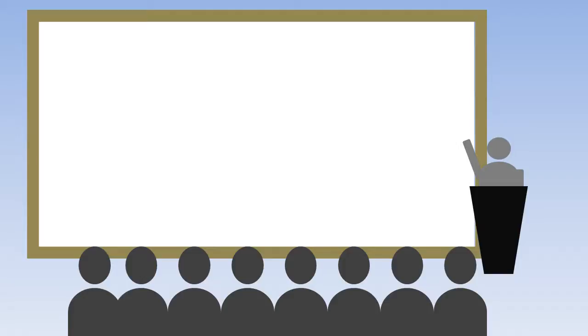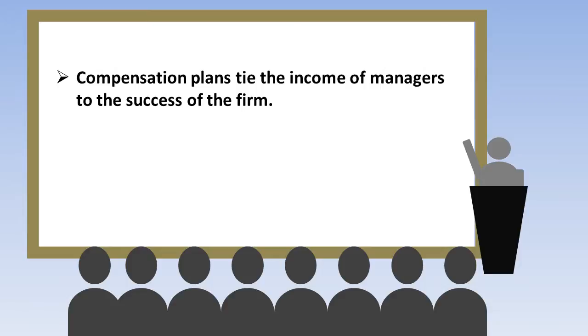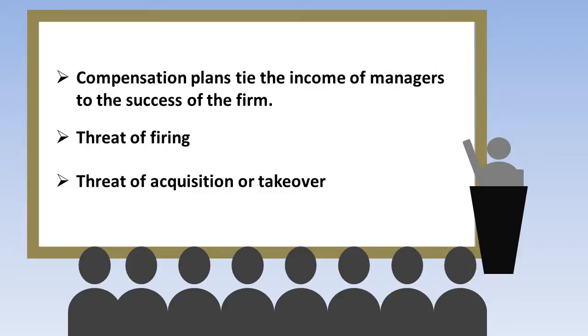To ensure that managers act in the best interest of shareholders, a firm will ensure the following. Number one, compensation plans tie the income of managers to the success of the firm — including direct cash payments of a fixed amount per period or cash rewards such as bonuses based on performance. Number two, threat of firing. And number three, threat of acquisition or takeover.